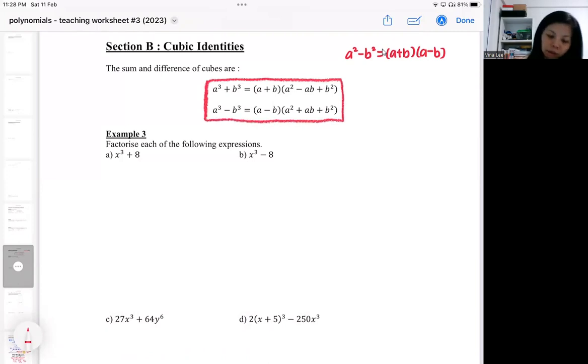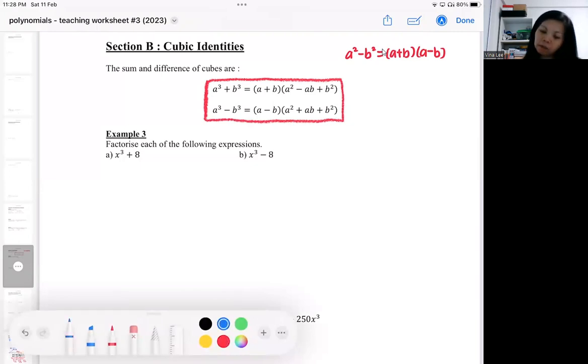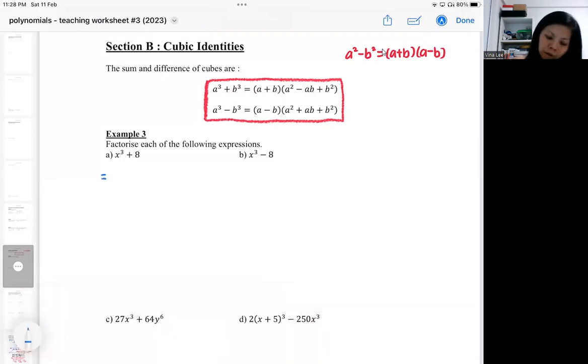I'm going to show you a few questions. My aim is to be able to get the a and the b in the question. Here is the simpler one - you realize it's very obvious a is x, b is 2. So you should go to this formula, which is just like a plus b, then a² minus ab plus b².